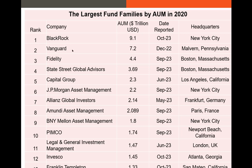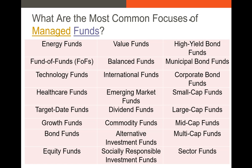Fund families like Vanguard might have a couple dozen mutual funds that they create and market to their clients, and they may also have some ETFs. Vanguard does, Fidelity does. This is essentially how open-end funds are primarily used now.